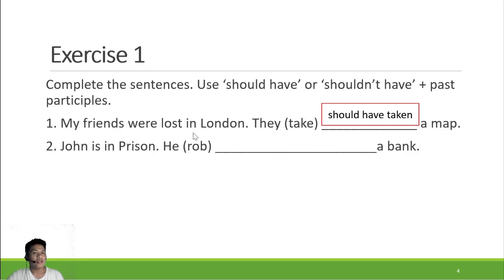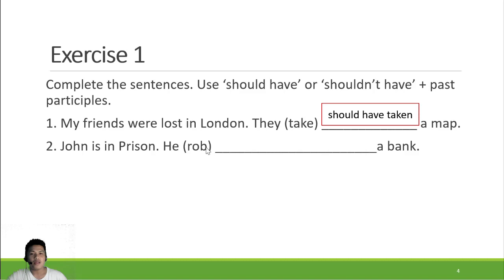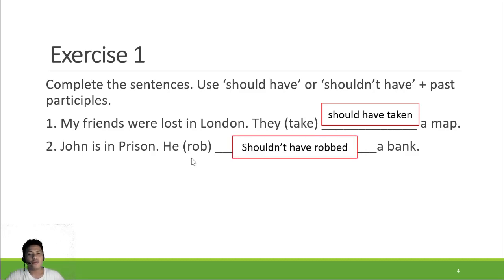They did not take a map with them and then they were lost. Look at the formula: 'take' should be changed to 'taken,' the past participle (verb three) of take, and we have 'should have.' Number two: 'John is in prison — he robbed a bank.' The answer is: he shouldn't have robbed a bank. John did that, so the police captured him and he's in prison now.